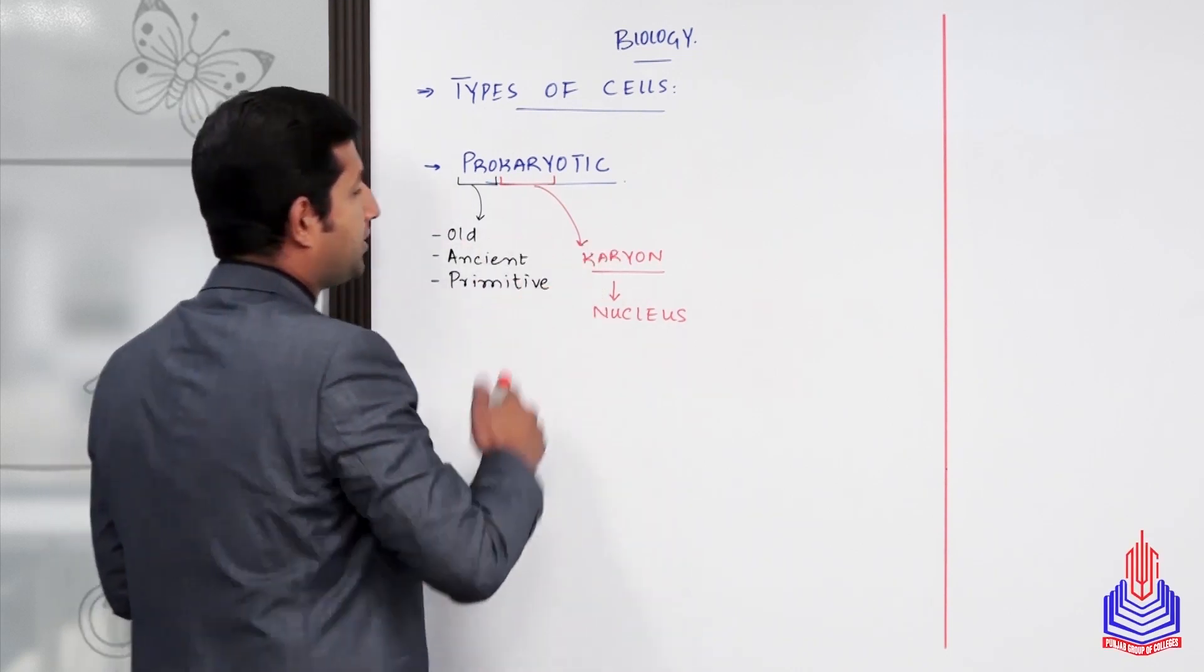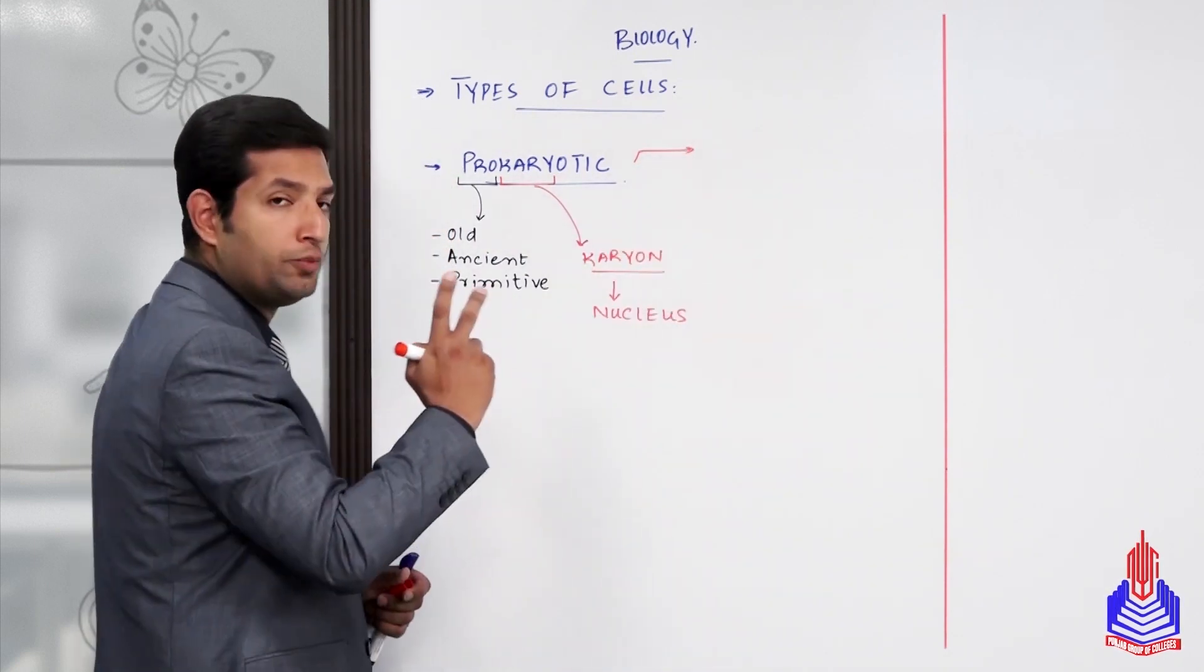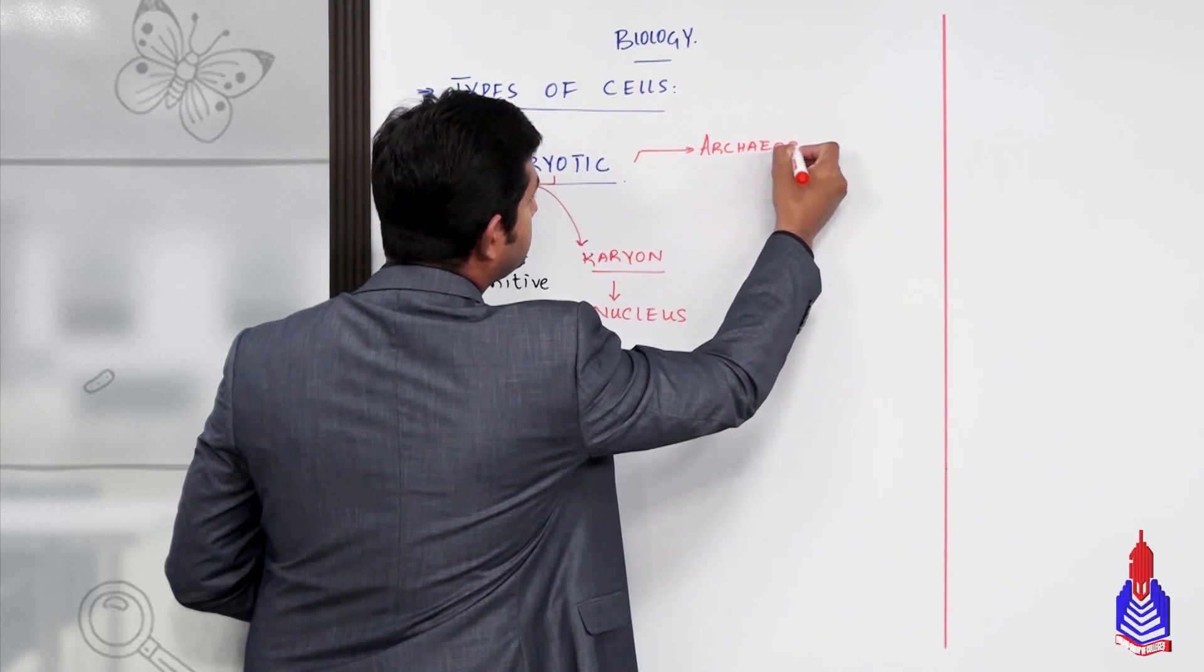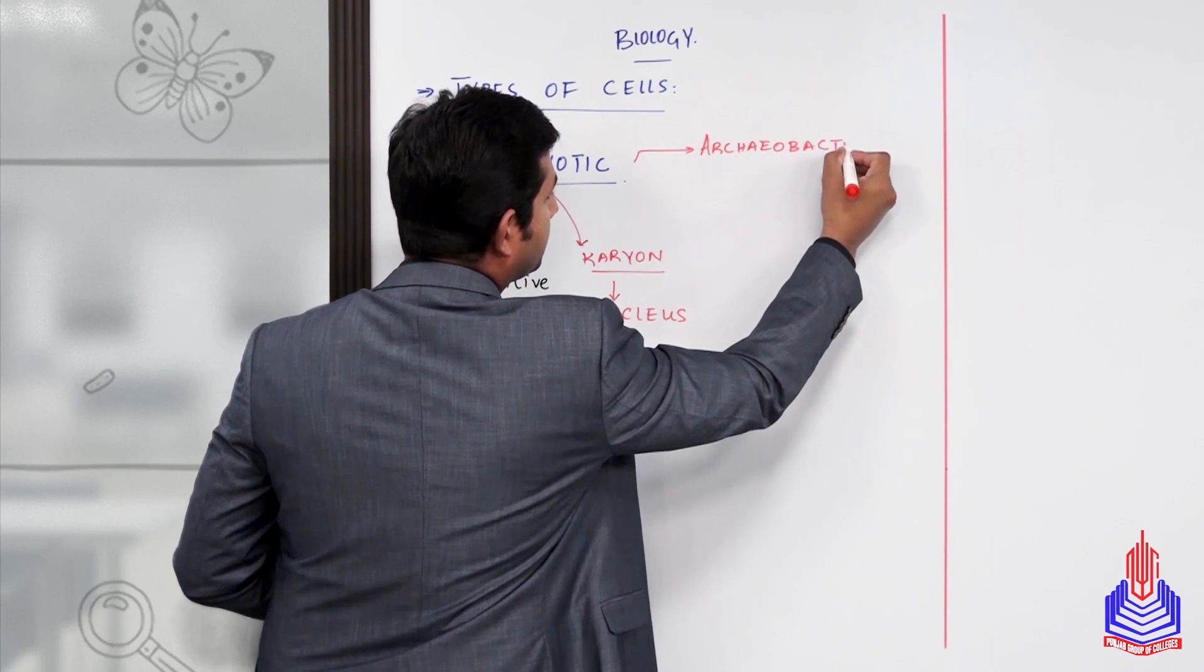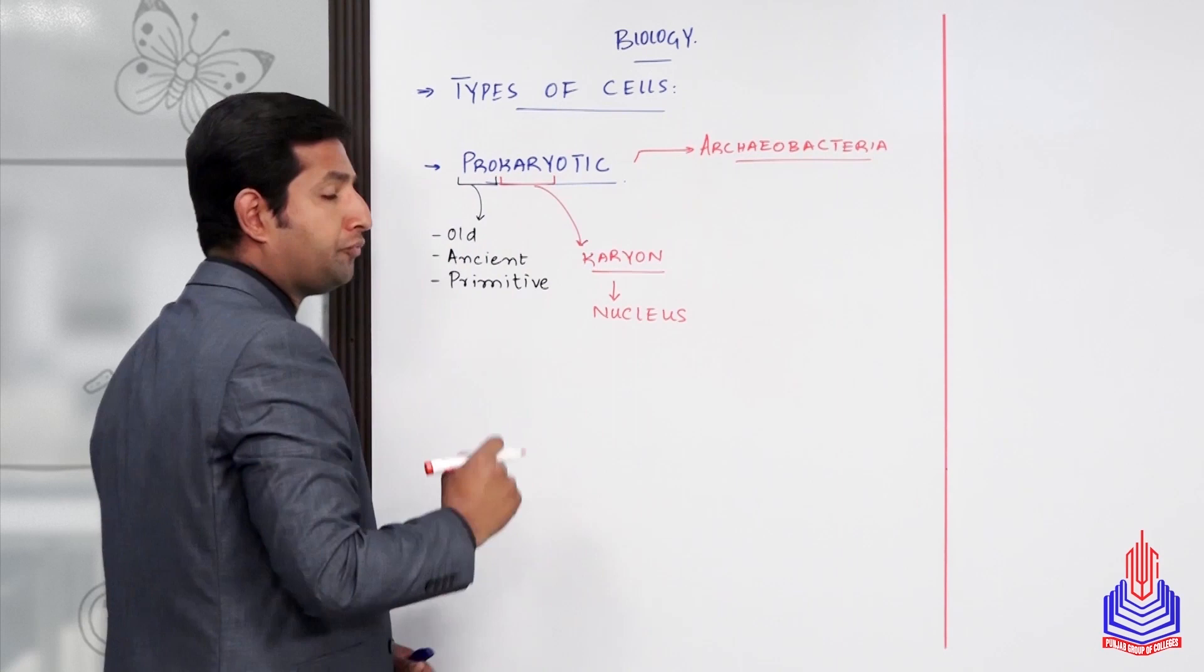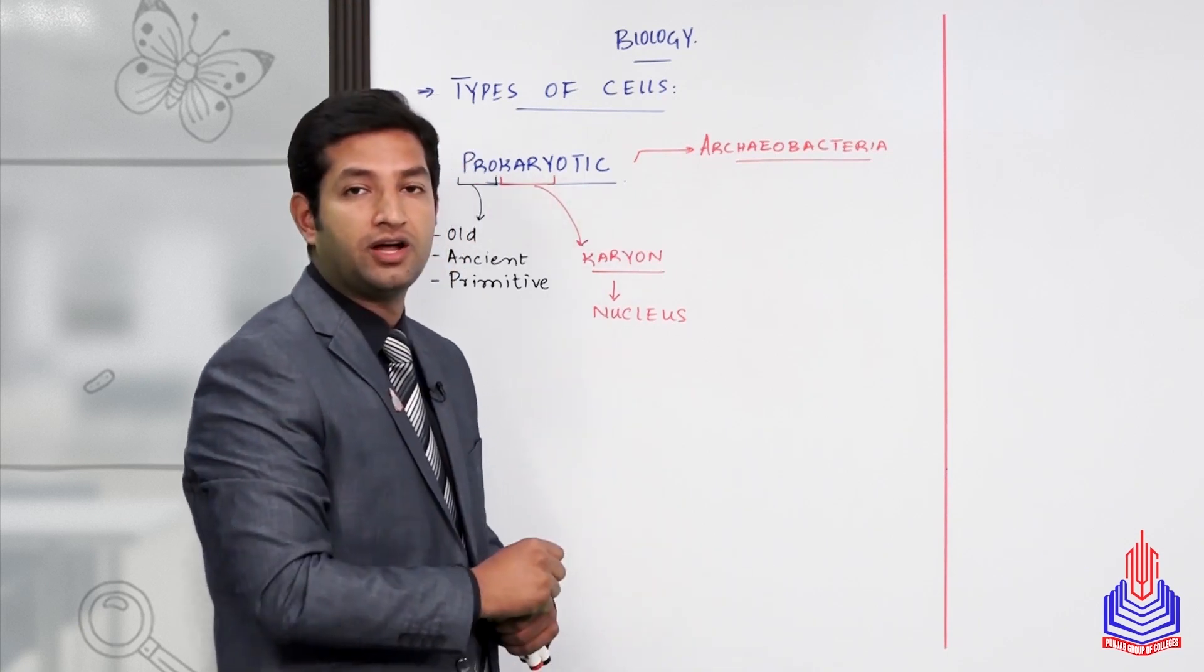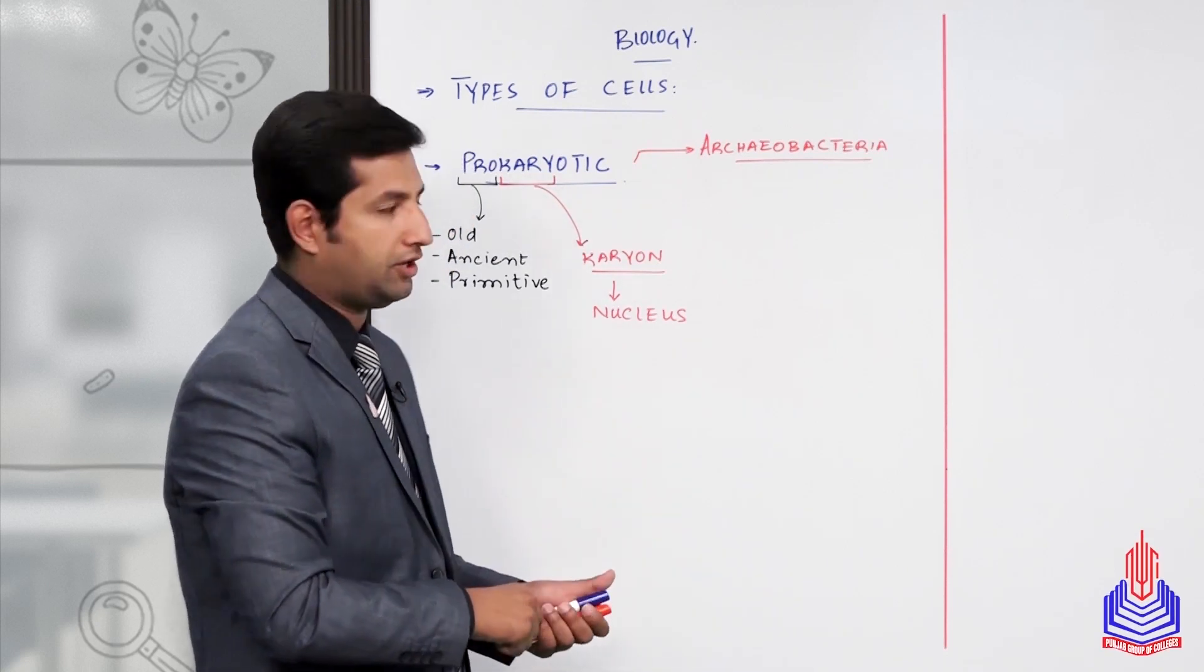Looking at further distribution, prokaryotic cells have been differentiated into two major groups. The older group is called archaeobacteria. From archaeology - studying old things - archaeobacteria were the first ever simplest life forms on planet Earth, the first organisms to appear in organized cellular form.